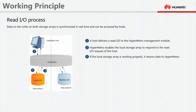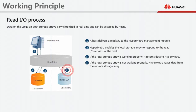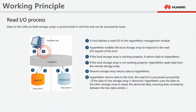If the local storage array is not working properly, HyperMetro reads data from the remote storage array. Step 11: Once HyperMetro returns data to the host, the read IO is processed successfully. Step 12: If the data of one storage array is abnormal, HyperMetro uses the data on the other storage array to repair the abnormal data, ensuring data consistency between the two data centers.